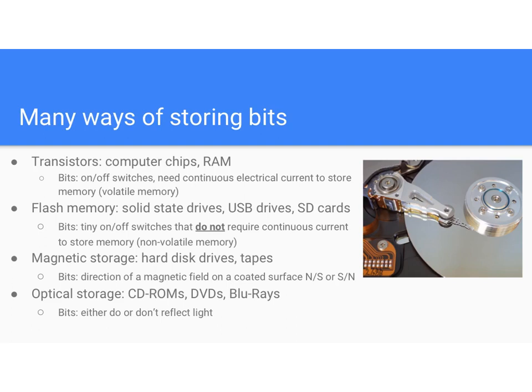When we're talking transistors, we're talking computer chips — a classic example would be RAM. So if you hear someone talking about the RAM on their computer, that's a way of storing data using transistors — just a bunch of little on/off switches.